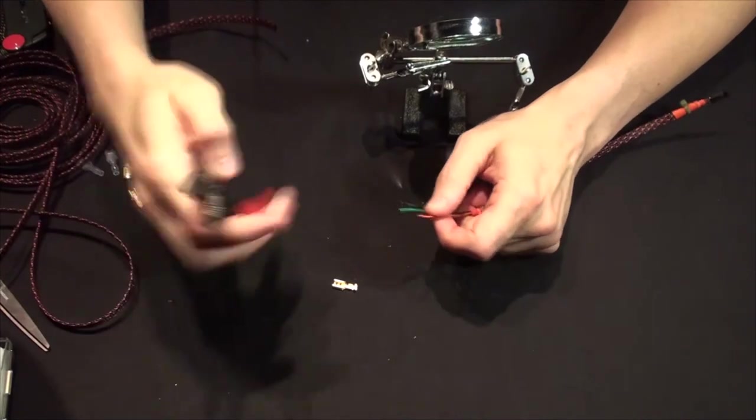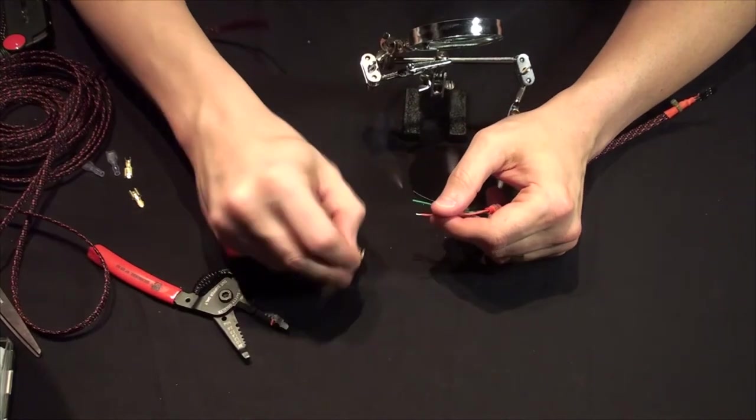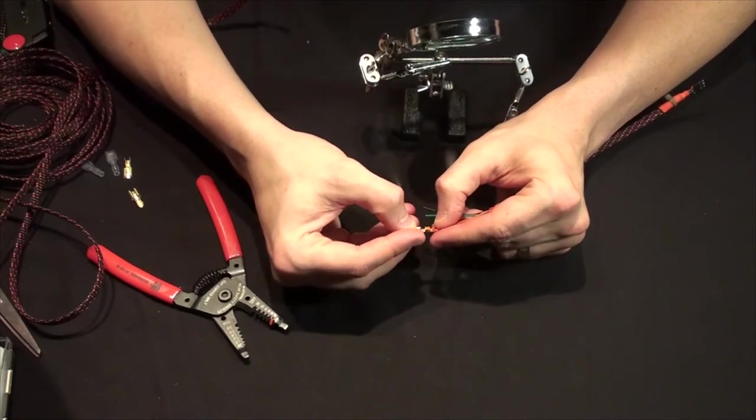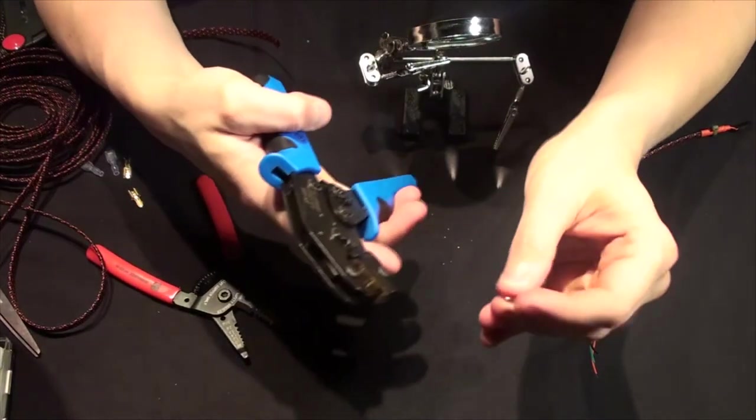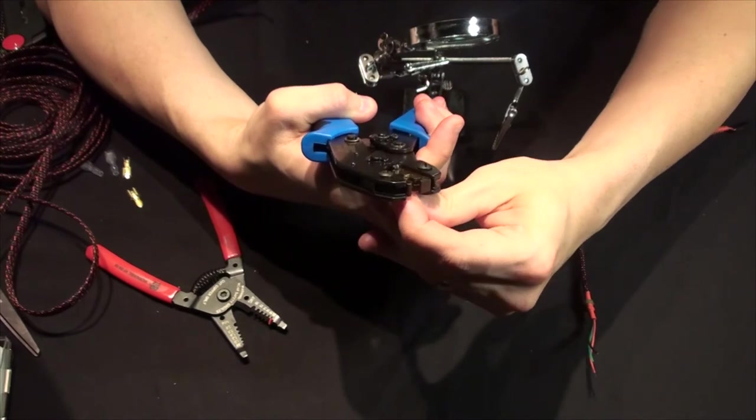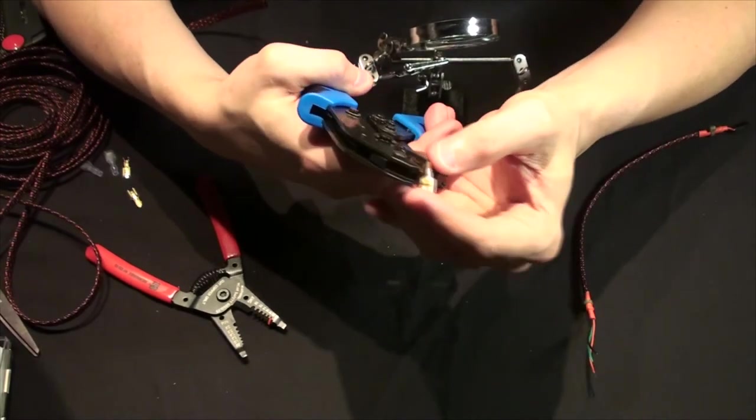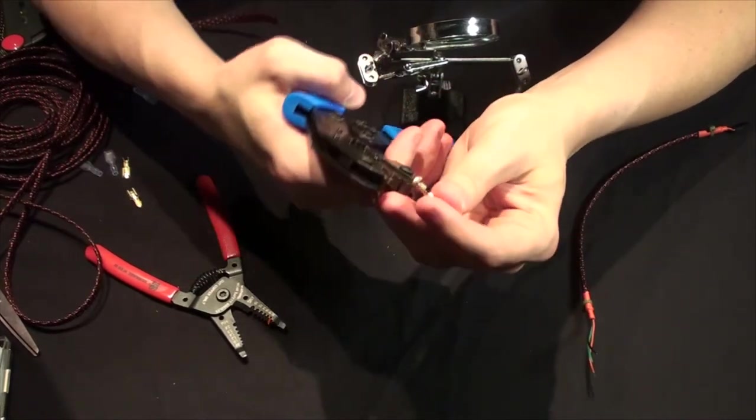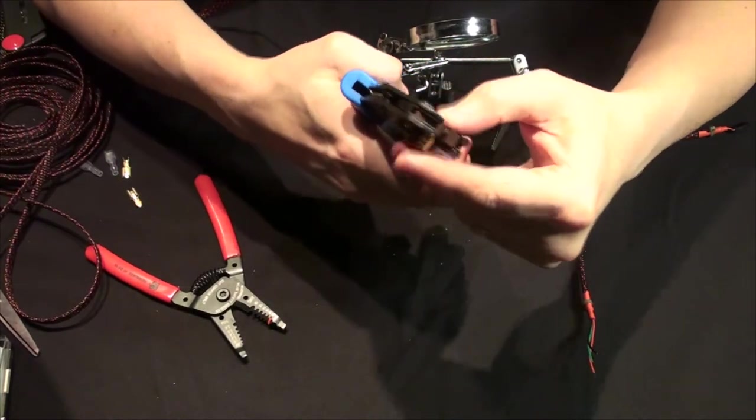As usual, you want to go ahead and start by stripping off just a little bit at the end. Now with these, you need a little bit more because they are of course bigger connectors. Line it up, and that looks pretty good. The nice thing about the ratcheting is that you can go ahead and slot it in ahead of time, get that satisfying click. And of course, remember with the ratcheting, there's two depths: one is for the large pair of wings, the other is for the smaller pair.